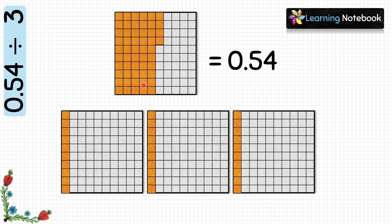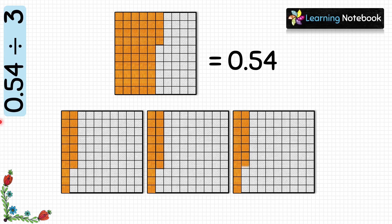We have 2 tenths which equal 20 hundredths, plus 4 hundredths — in total we have 24 hundredths. So let's place these 24 hundredths in each group until we run out. We keep placing these 24 hundredths into each of the 3 groups. And now we have placed all the hundredths in each of these 3 groups.